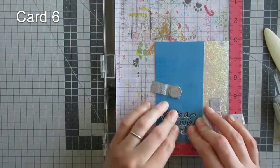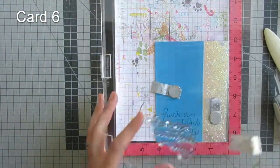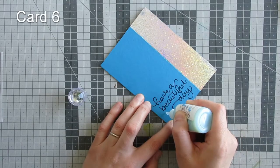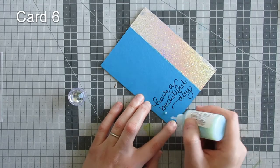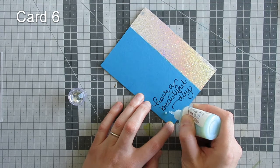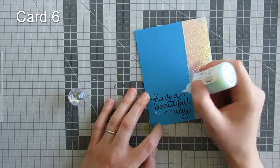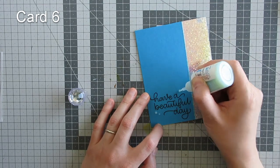I then stamped a sentiment and I'm adding some Nouveau Drops in Sea Breeze, which is a nice blue color. They will dry quite clear and translucent, but they will show the blue color from below.